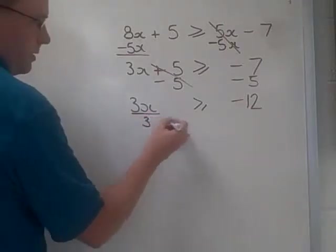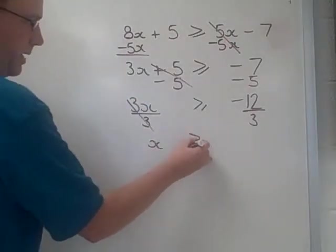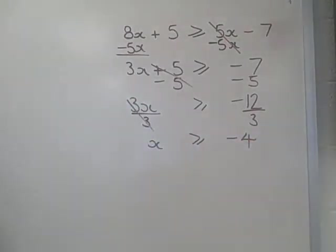So, the final step here, we can divide by 3, and the 3's will cancel, so x is greater than or equal to negative 4.